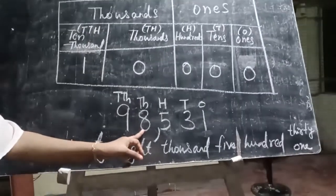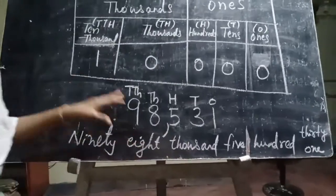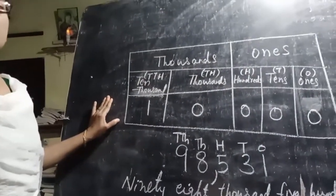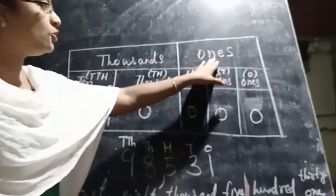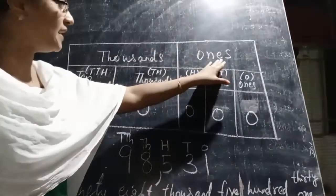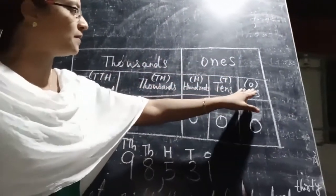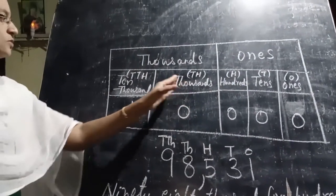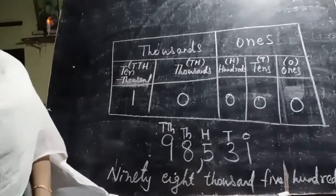One more time: ninety-eight thousand, five hundred thirty-one. In the Indian place value system, a number is split into groups or periods. The first period is the ones place with three places — ones, tens, hundreds. The thousands period has two places — thousands and ten-thousands.